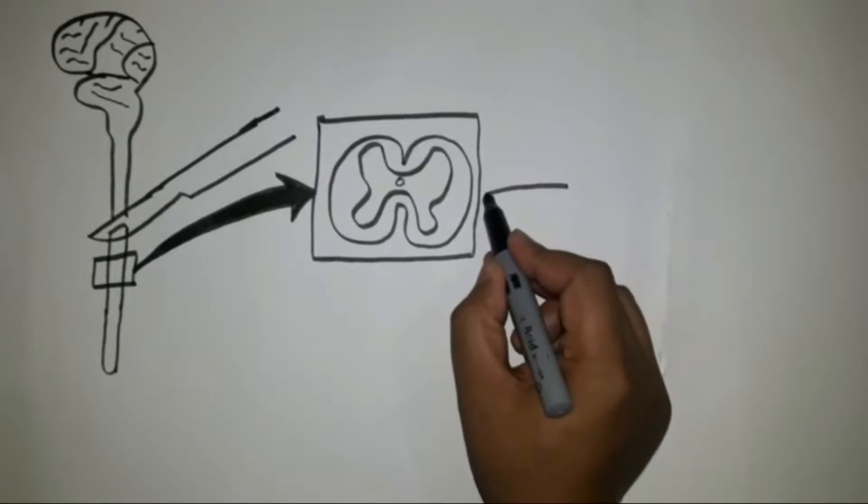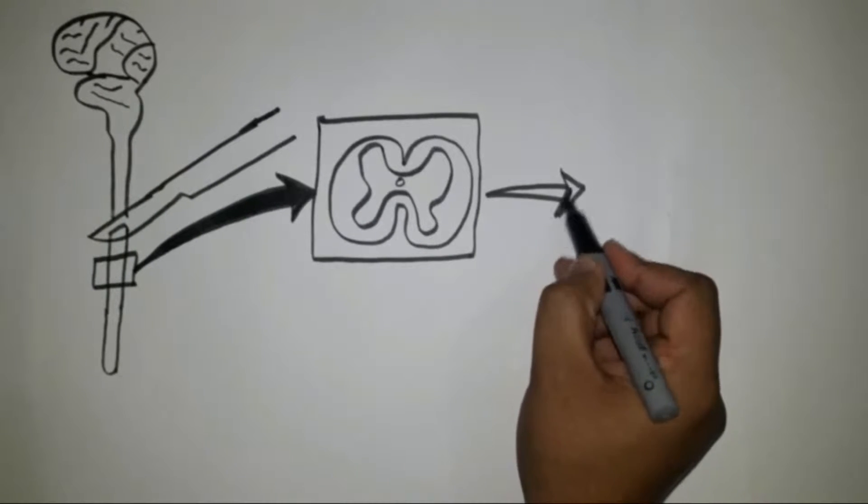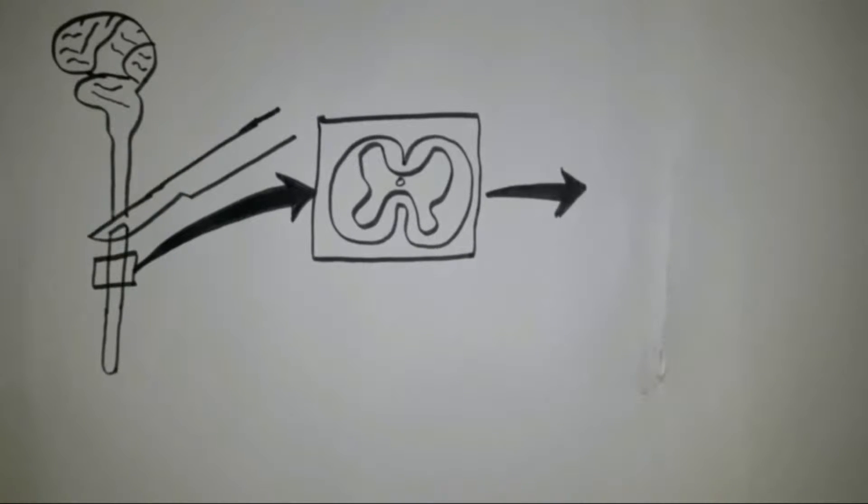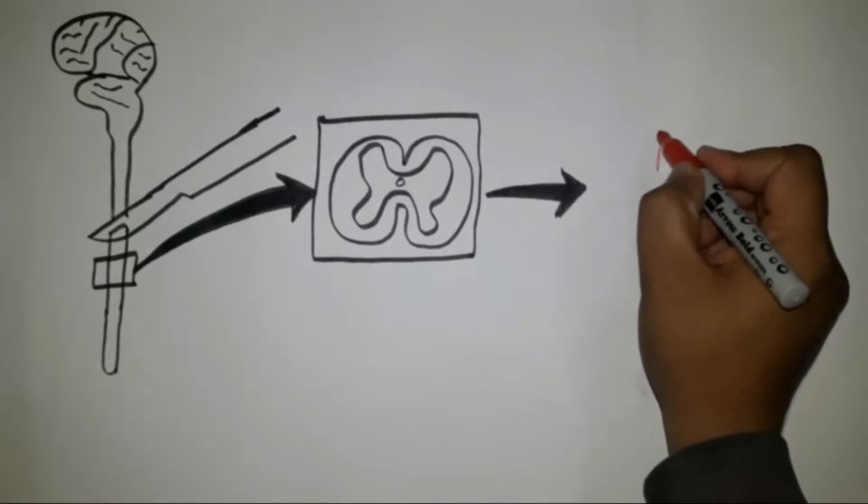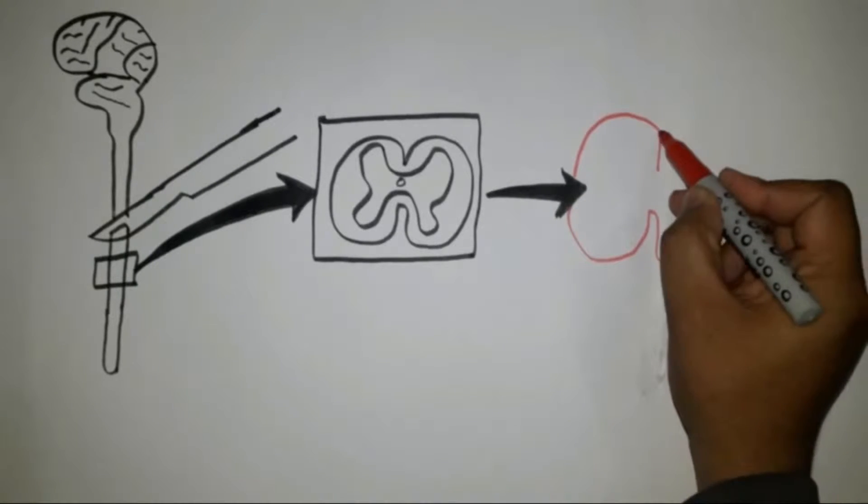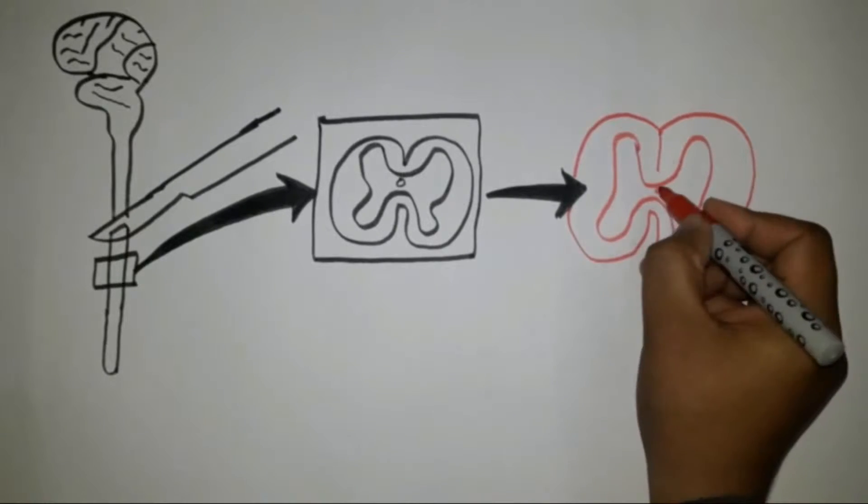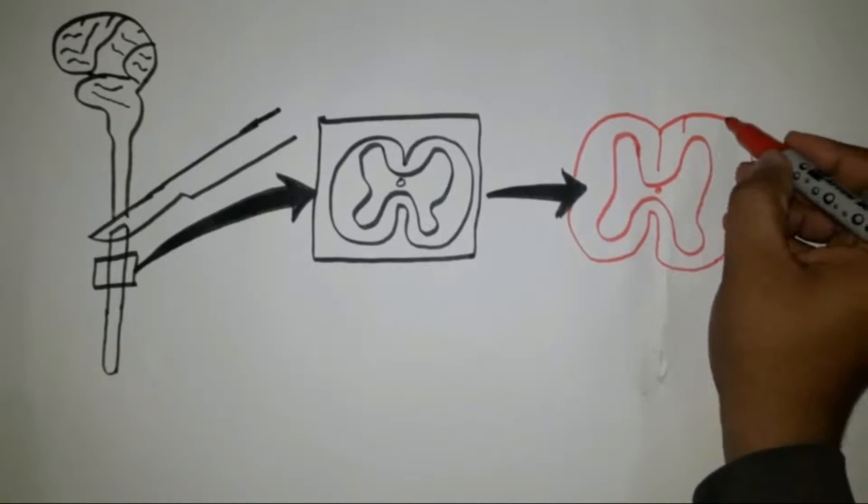A cross section of the spinal cord shows H-shaped gray matter in the center, surrounded by white matter. The H-shaped gray matter consists of anterior and posterior horn.